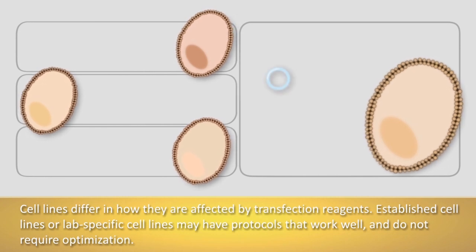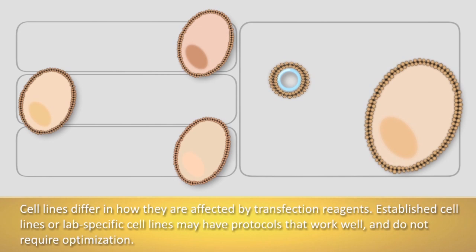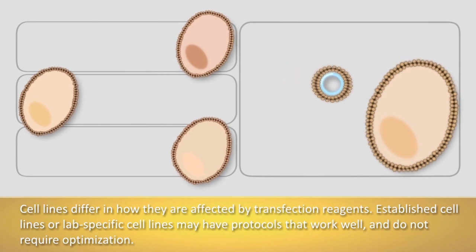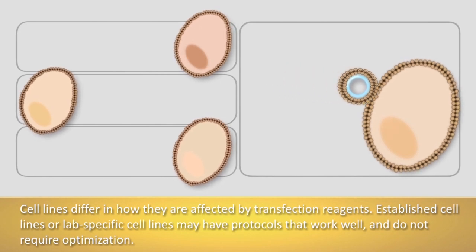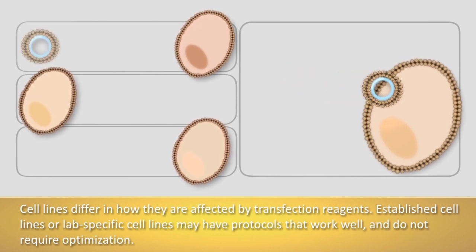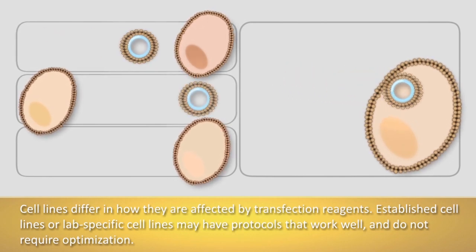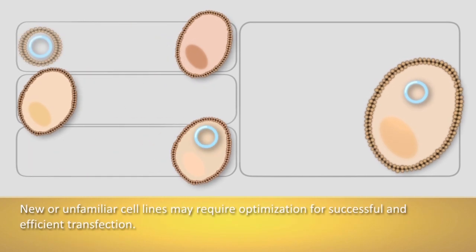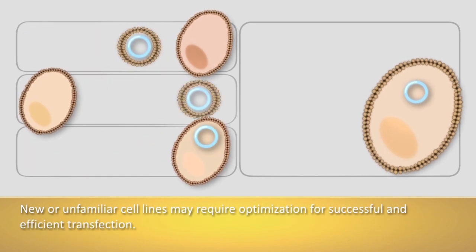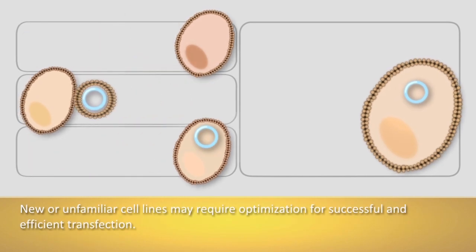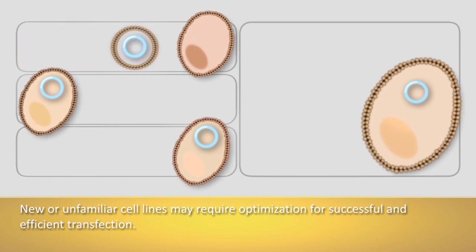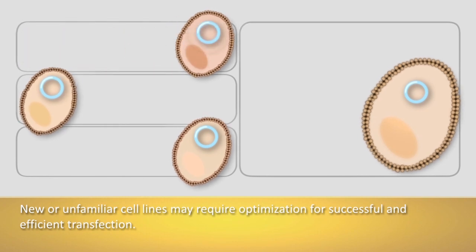Established or lab-specific cell lines may have existing protocols that work well, thus saving someone new to transfection the work of optimizing the transfection conditions. However, new or unfamiliar cell lines may require optimization for successful and efficient transfection.